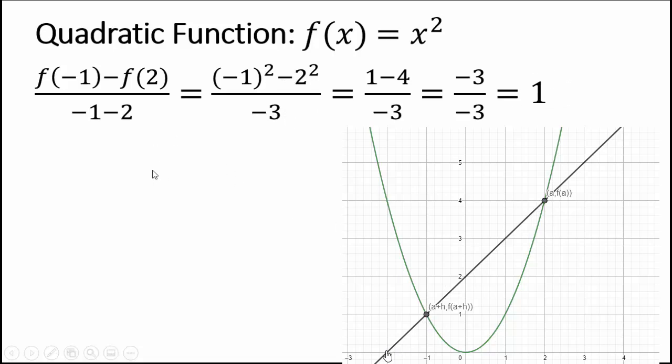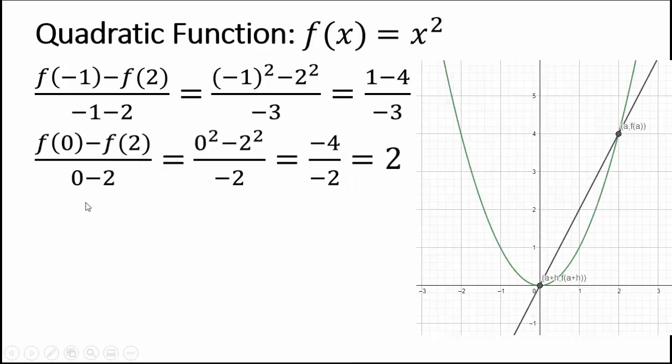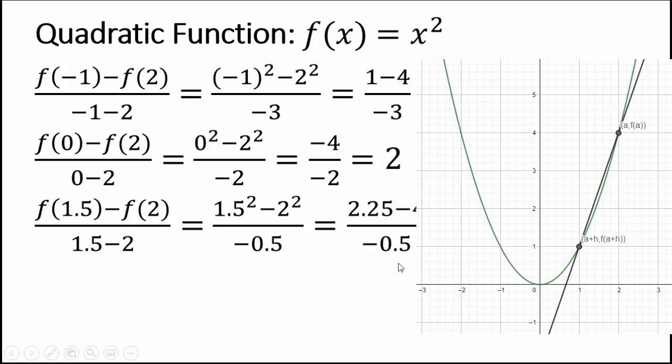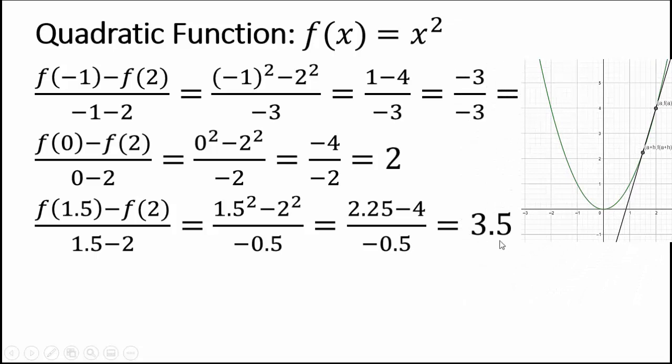What if I take a point a little closer to 2, say 0? Then I will do the same computation, and I'll end up with 2, and that's this second line you see here. What about going a little closer, like 1.5? And again, I'll do the computation here. You can check that for yourself, and you get 3.5, which is this third line you see here.